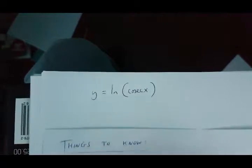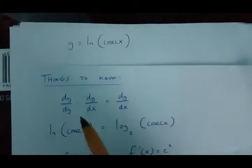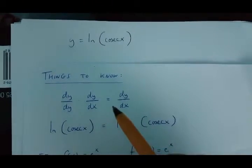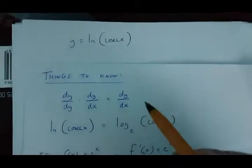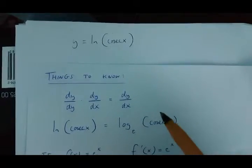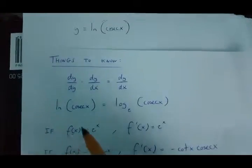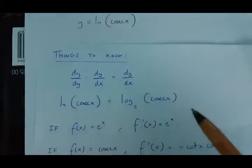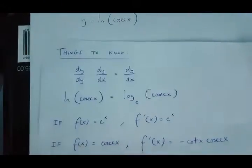Now to do this, I need to know a few rules. The first one is dy over dy times dy over dx equals dy over dx. The second rule is ln cosec x is the same as log cosec x to the base e.